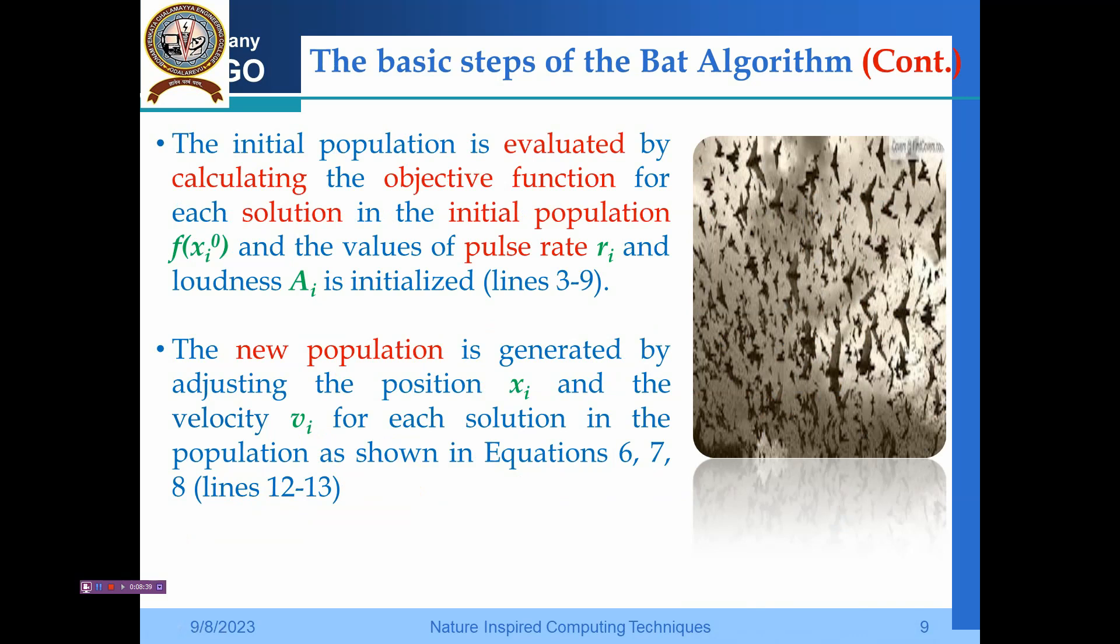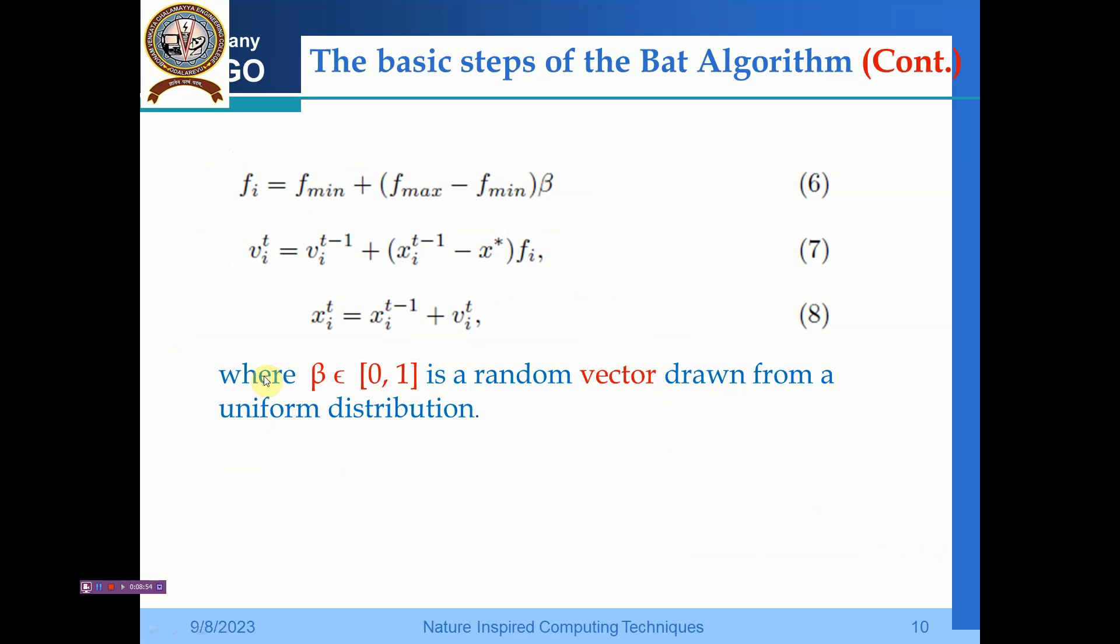A new population is generated using equations for position x_i and velocity v_i, represented in Equations 6 and 7 of lines 12 and 13. f_i = f_min + (f_max - f_min) * beta. v_i(t) = v_i(t-1) + [x_i(t-1) - x*] * f_i, and x_i(t) = x_i(t-1) + v_i(t). We can calculate the new x_i(t) using the old one plus v_i(t). Beta is a random vector drawn from a uniform distribution.